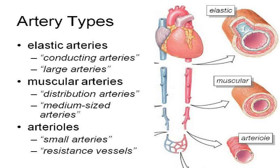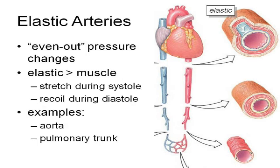As you move from the heart, the biggest arteries are called elastic arteries, and they branch to form muscular arteries or distribution arteries, which then branch to form arterioles. Elastic arteries have more elastic tissue than muscular tissue. When the ventricles contract and force blood out, these elastic arteries actually stretch, and then the elastic connective tissue helps them recoil — almost like a second push to send that blood even further.